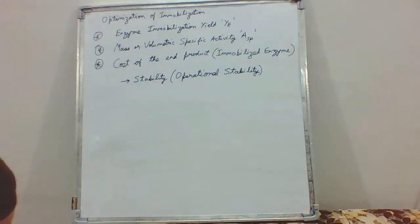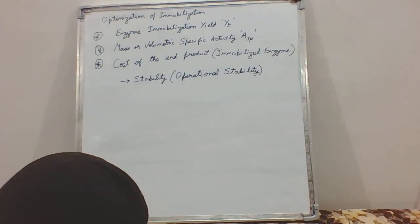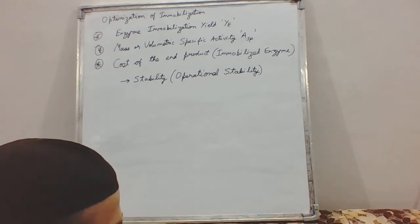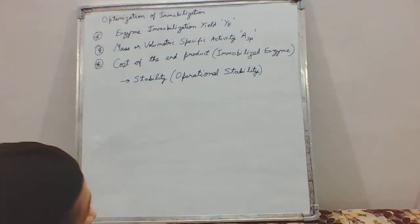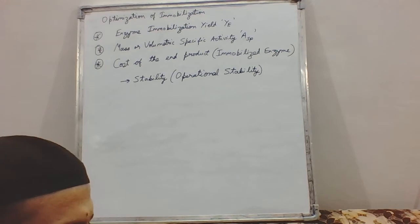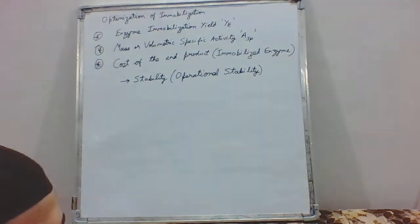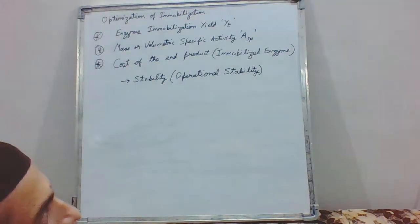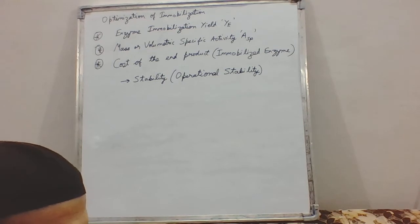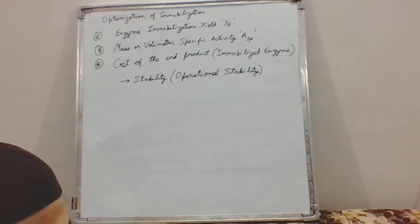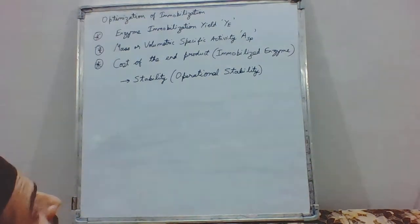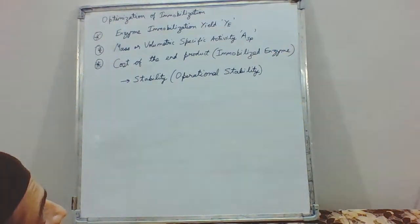This is what is required in the optimization process. In the optimization process, we can change the support or the method of immobilization. We can switch from adsorption to covalent binding, or altogether onto membrane-based systems, gel-based systems, encapsulation, ultrafiltration, or we can go for carrier-free based methods such as cross-linked enzyme crystals or cross-linked enzyme aggregates. Whatever the case might be, these are the parameters which need to be optimized and must be focused on.